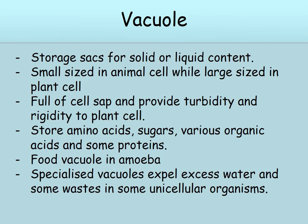Next is vacuole. It is a storage sac for solid or liquid content. It is small sized in animal cells while large sized in plant cells. It is full of cell sap and provides turgidity and rigidity to plant cells. It stores amino acids, sugars, various organic acids and some proteins.